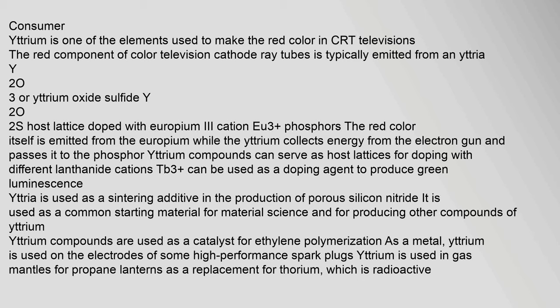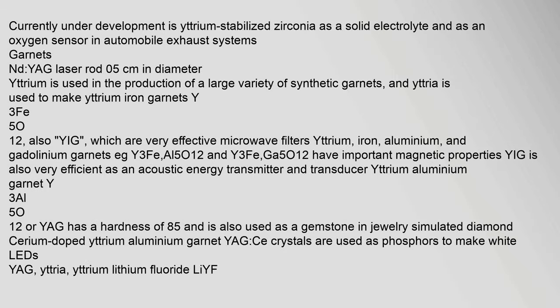Yttrium is one of the elements used to make the red colour in CRT televisions. The red component of colour television cathode ray tubes is typically emitted from an yttria (Y2O3) or yttrium oxysulfide (Y2O2S) host lattice doped with europium-3 (Eu3+) phosphors. The red colour itself is emitted from the europium while the yttrium collects energy from the electron gun and passes it to the phosphor. Yttria is used as a sintering additive in the production of porous silicon nitride, and yttrium compounds are used as a catalyst for ethylene polymerization. As a metal, yttrium is used on the electrodes of some high-performance spark plugs and in gas mantles for propane lanterns as a replacement for thorium.